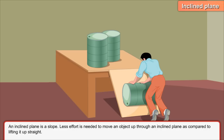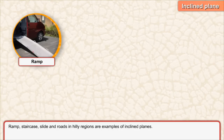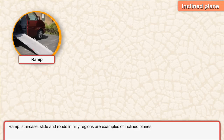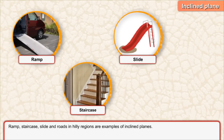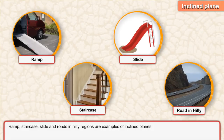Inclined plane. An inclined plane is a slope. Less effort is needed to move an object up through an inclined plane as compared to lifting it straight up. Ramp, staircase, slide, and roads in hilly regions are examples of inclined planes.